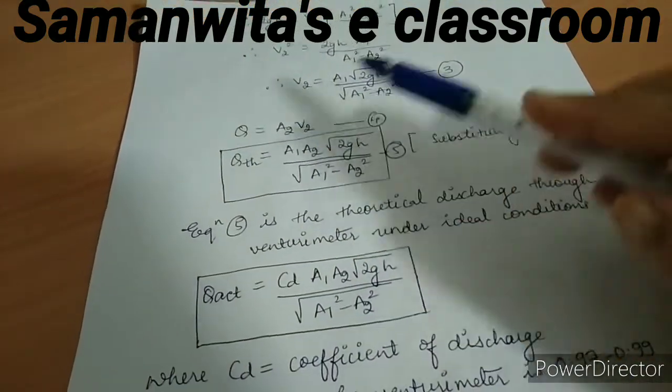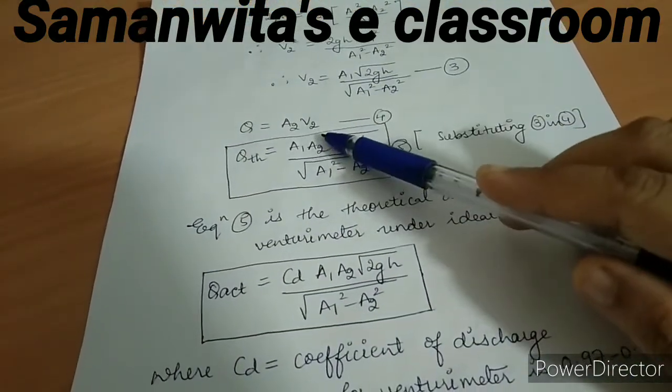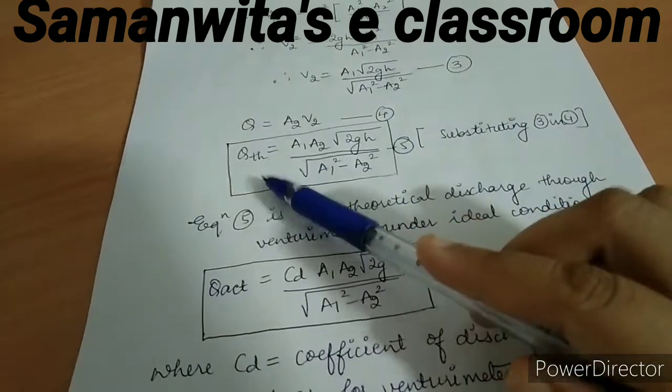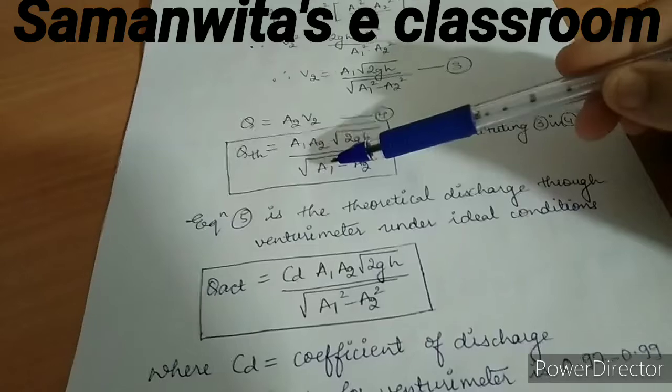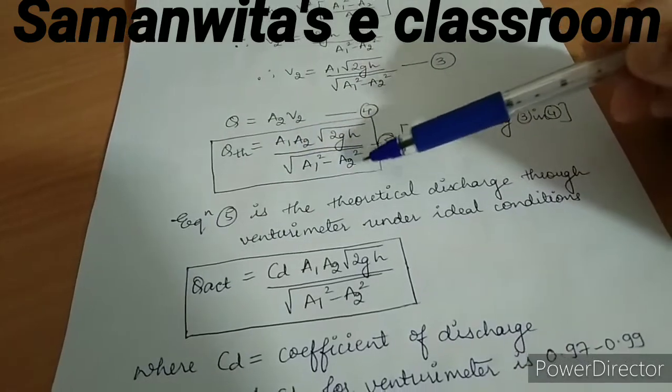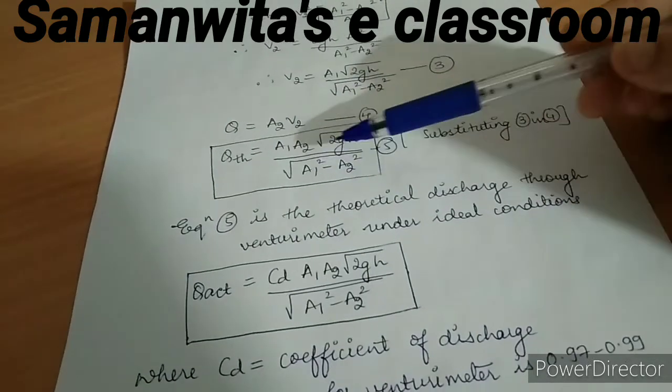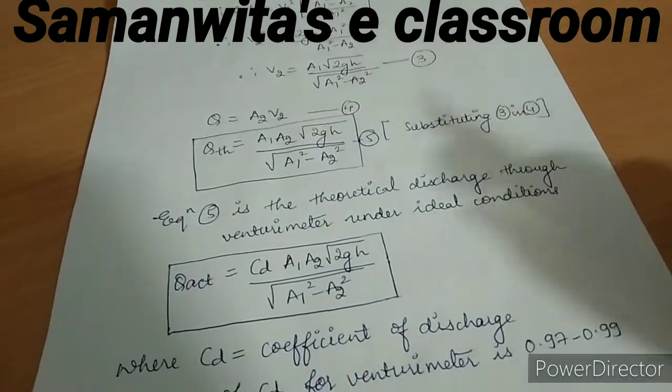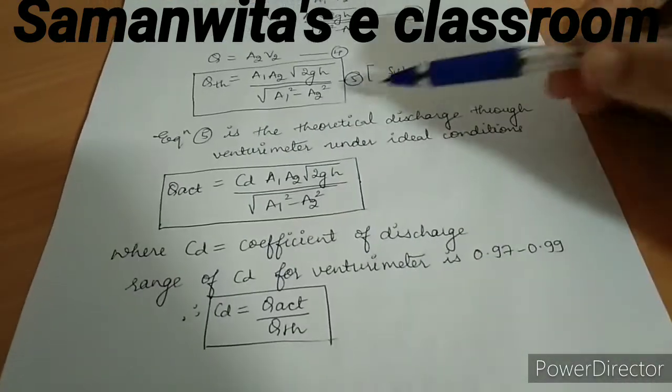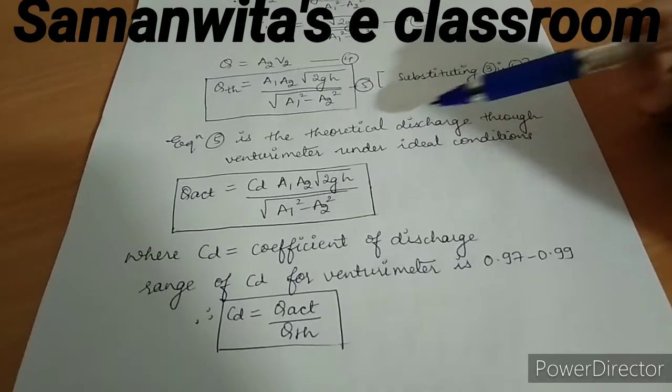We know Q is equal to A2V2, so I can substitute v2 in this equation. So my Q theoretical can be written as A1A2√(2gh)/√(A1² - A2²), where A1 and A2 is the area of sections 1 and 2. Now this equation 5 which I have marked over here is the theoretical discharge through the venturimeter under ideal conditions.